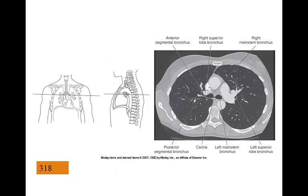Let's talk about mediastinal structures. The mediastinum is basically the midline region of the thoracic cavity, between the two pleural cavities of the lungs. Some mediastinal structures include the thymus gland, the trachea, and the esophagus. When looking at CT images, these are the structures we want to identify. This image looks at the carina, right and left main bronchi, and the esophagus — though it's not shown very well, it's there.